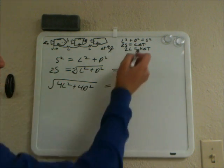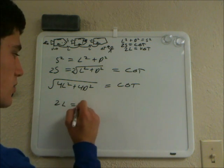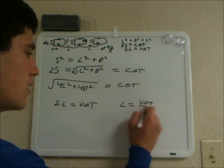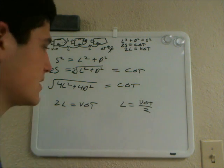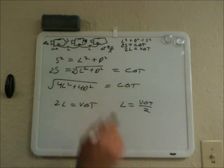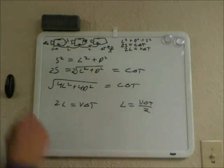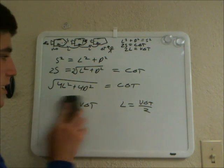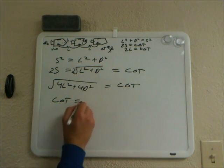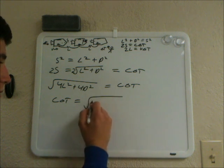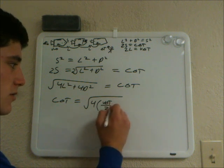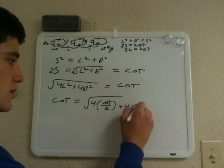Now let's take the equation 2L equals V delta T and write it as L equals V delta T over 2. This is the whole length, which is 2L, equals the velocity of the spacecraft times delta T observed by this person. So substituting in, C delta T equals the square root of 4 times (V delta T over 2) squared plus 4D squared.